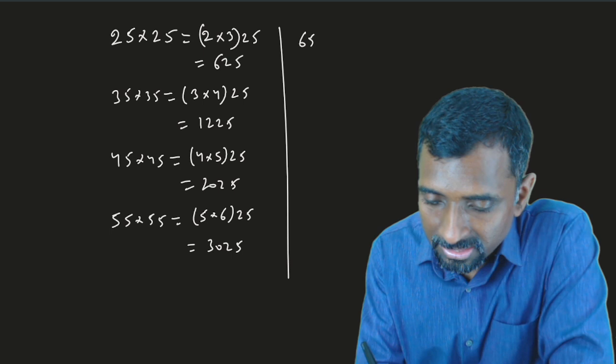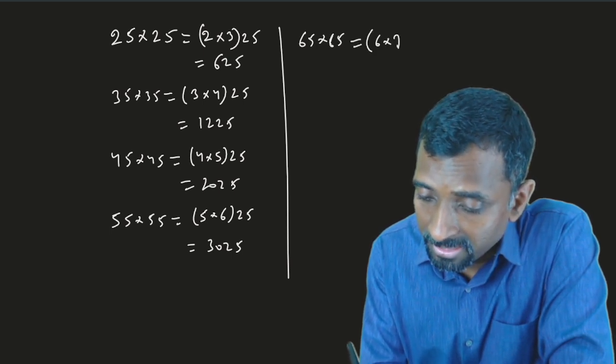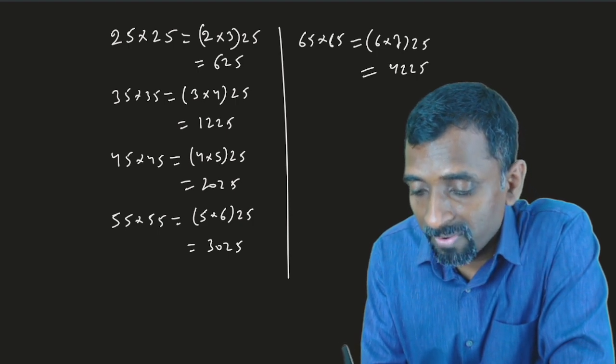Now, if I say 65 multiply 65, it is 6 multiply the next digit 7, then 25. It is 4225.